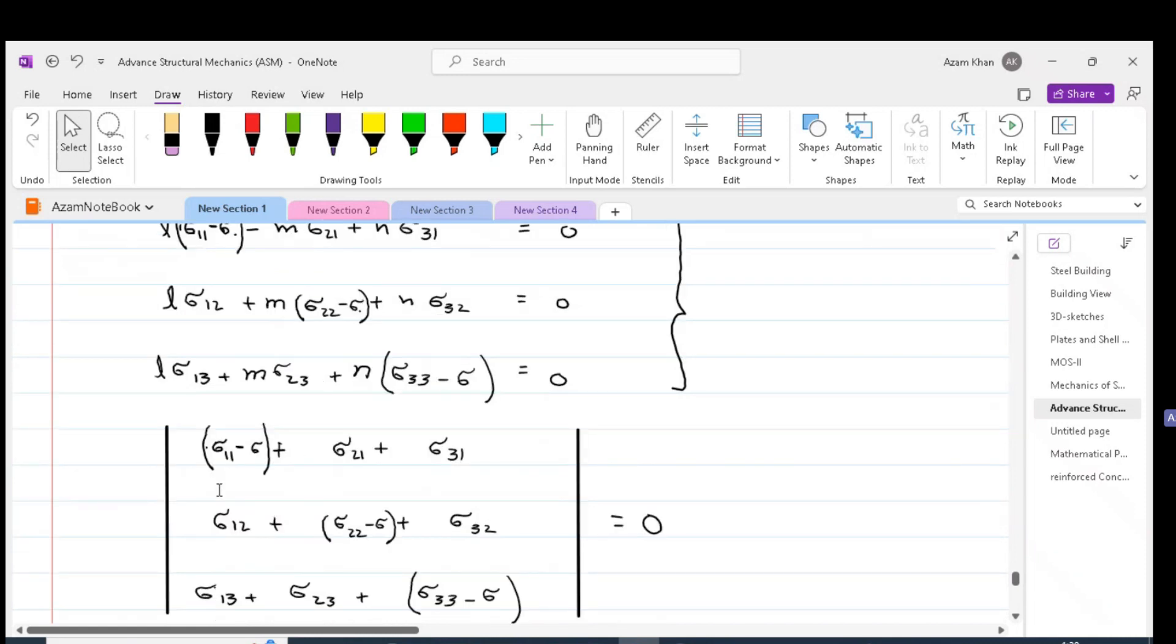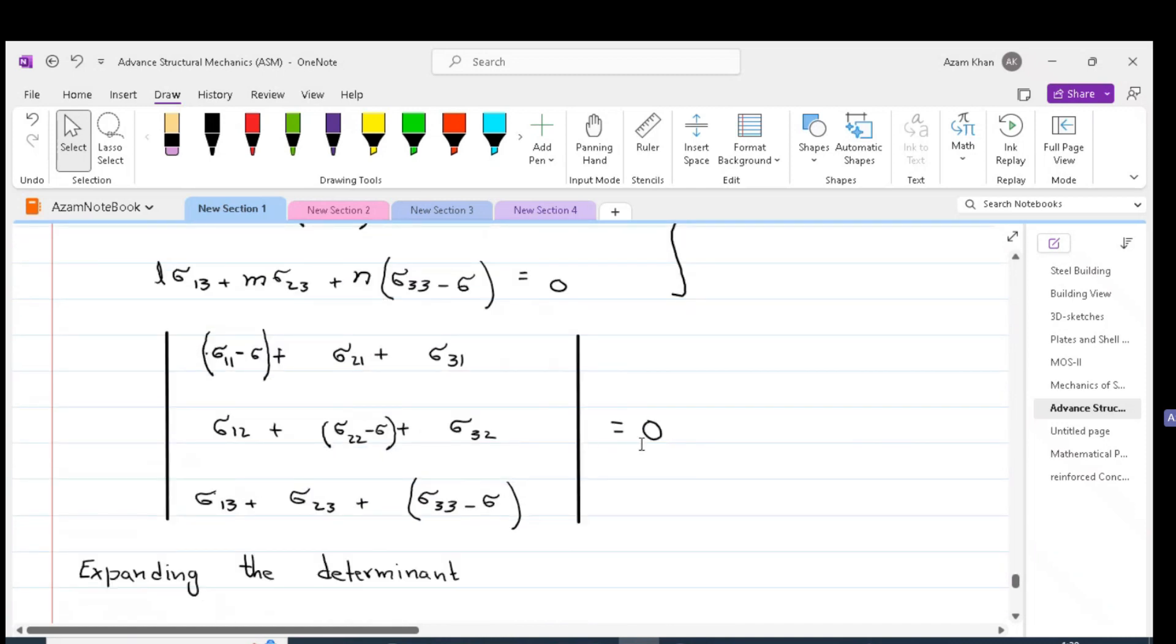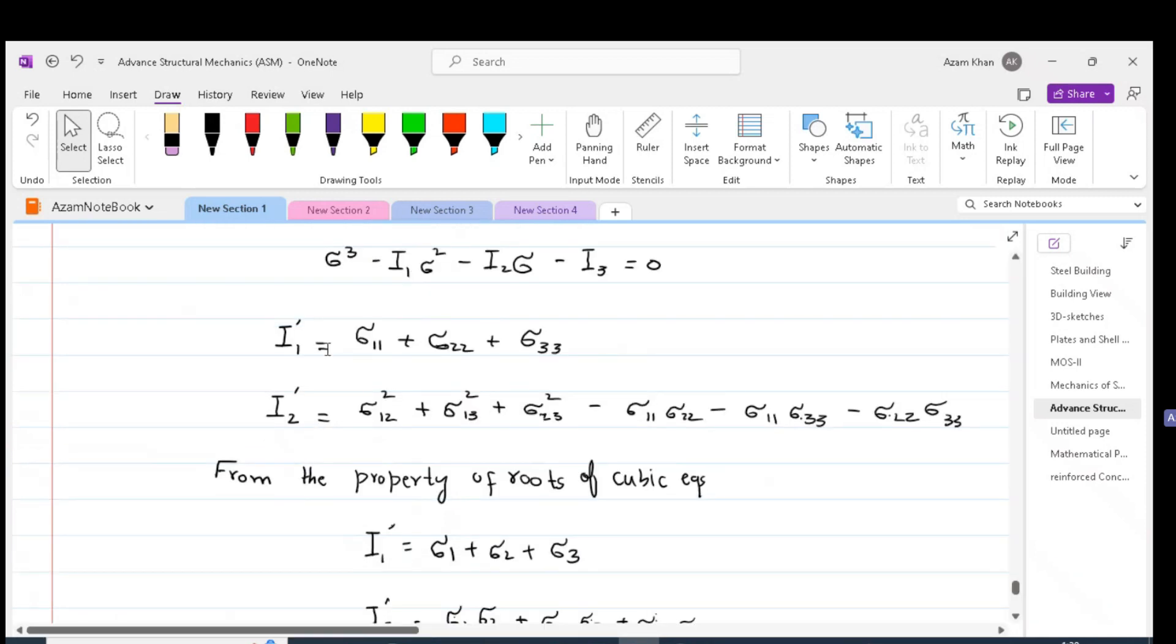We can take determinant of these three equations and equate that to zero. Expanding the determinant, we will get a characteristic equation. This characteristic equation has got three coefficients which are defined. The first coefficient is I1_prime, which is equal to the sum of the diagonal elements of the stress tensor.